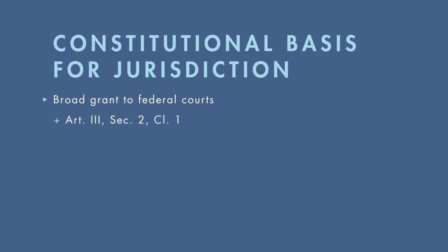Article 3, Section 2, Clause 1 of the Constitution sets forth the foundation of federal question jurisdiction, and it provides that the federal judicial power shall extend to all cases in law and equity arising under this Constitution, the laws of the United States, and treaties made or which shall be made under their authority. In sum, this part of the Constitution provides that the federal courts have jurisdiction over all cases arising under federal law — hence the reason we call this type of jurisdiction federal question jurisdiction, because the matter to be decided is a question or issue of federal law.